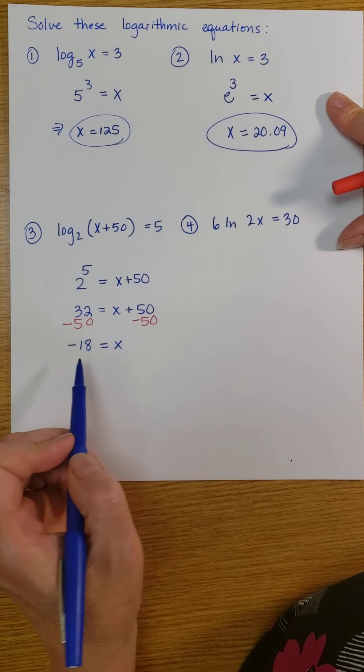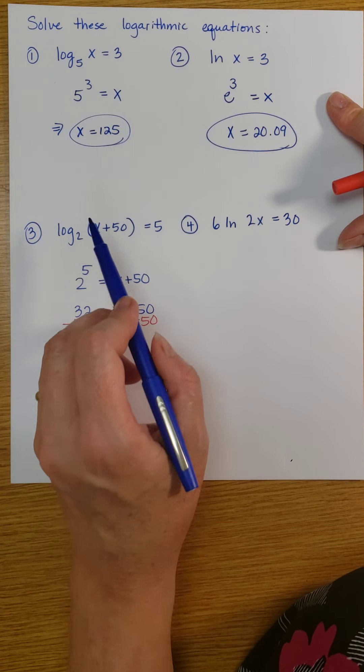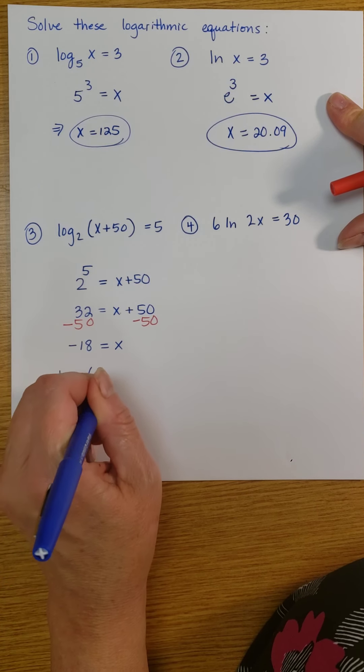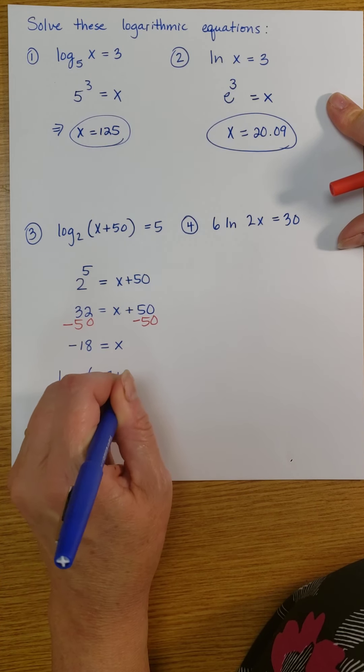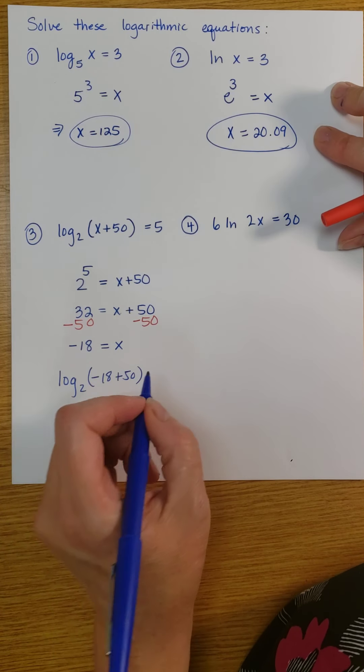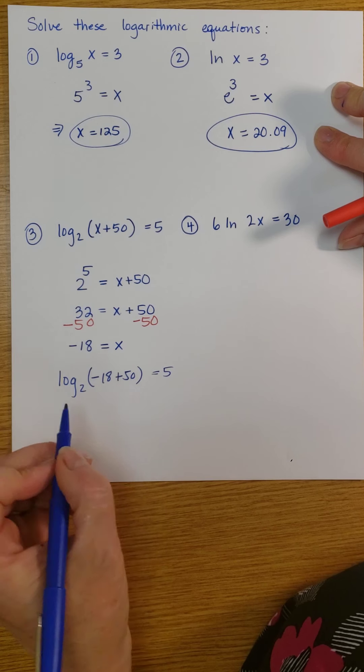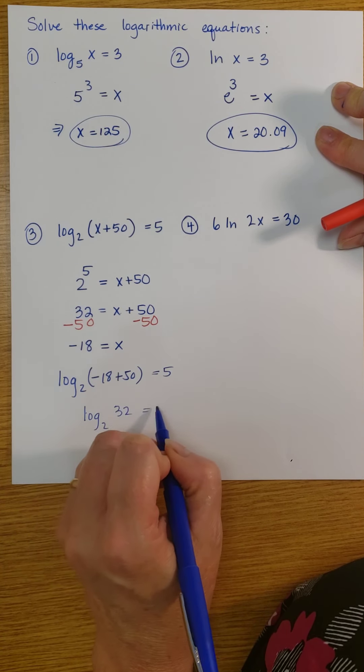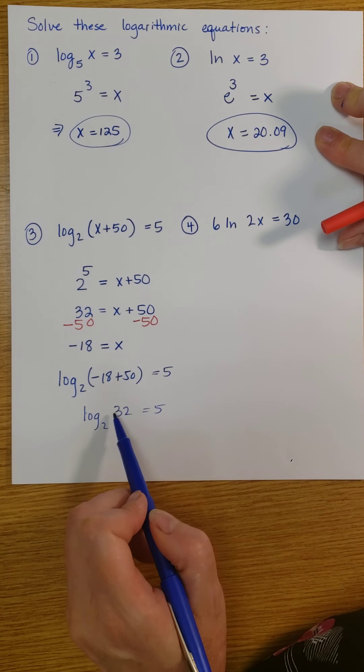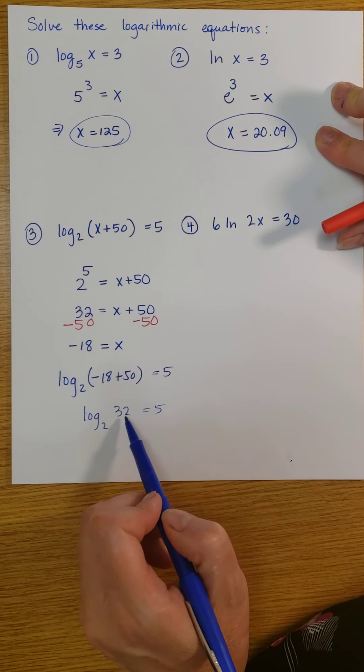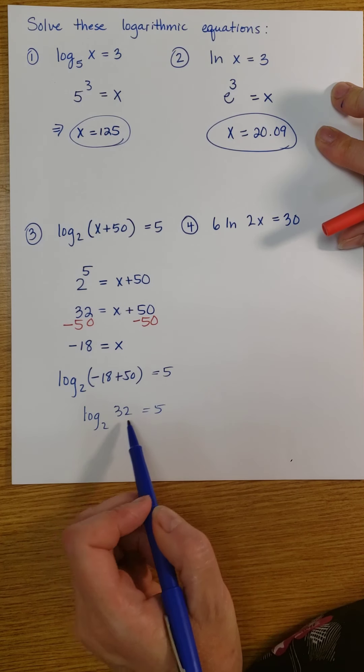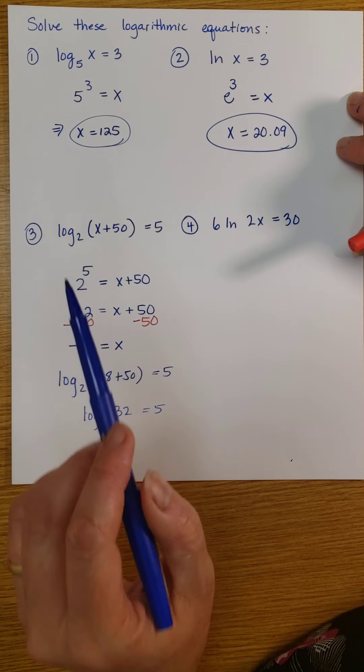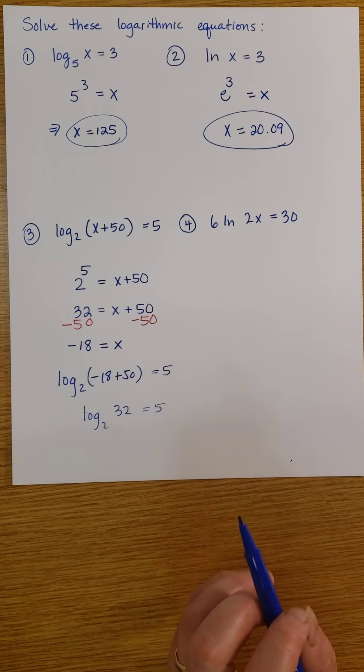But look here. I've got to check my answer. x equals negative 18. When I plug it in, negative 18 plus 50 is going to give me the 32. And of course, when you're looking at this log base 2 of 32, you ask yourself, what power on 2 gives me 32? And of course, that's 5. So we verified our answer here. But notice we do have to plug it in because we want to make sure that we're not going to get a negative inside the log.